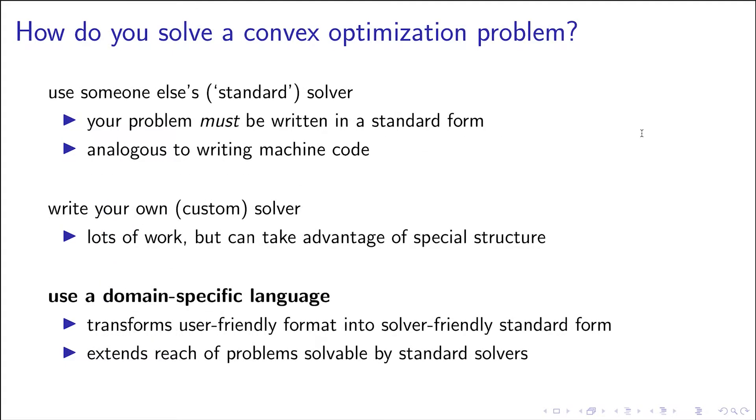Now how do you solve a convex optimization problem? Well, there are a few different approaches. One is to use someone else's solver, a standard solver. In order to use such a solver, you have to write your problem in the standard form that it takes in.